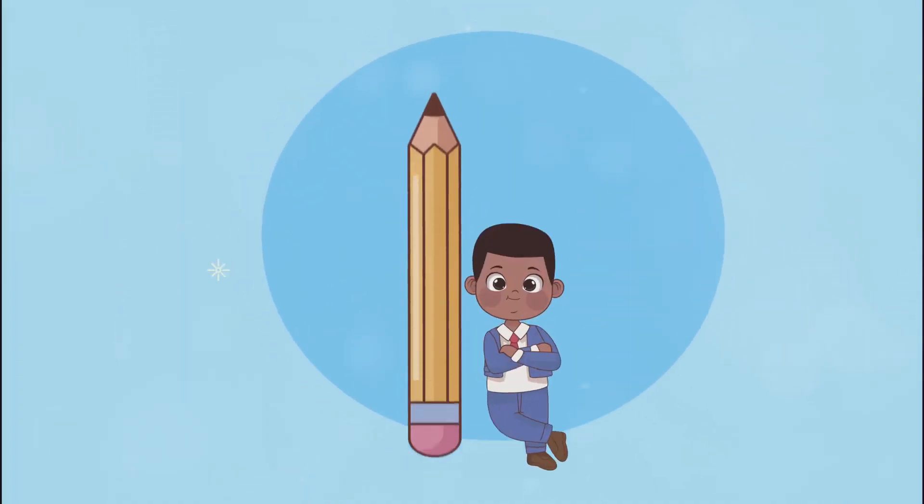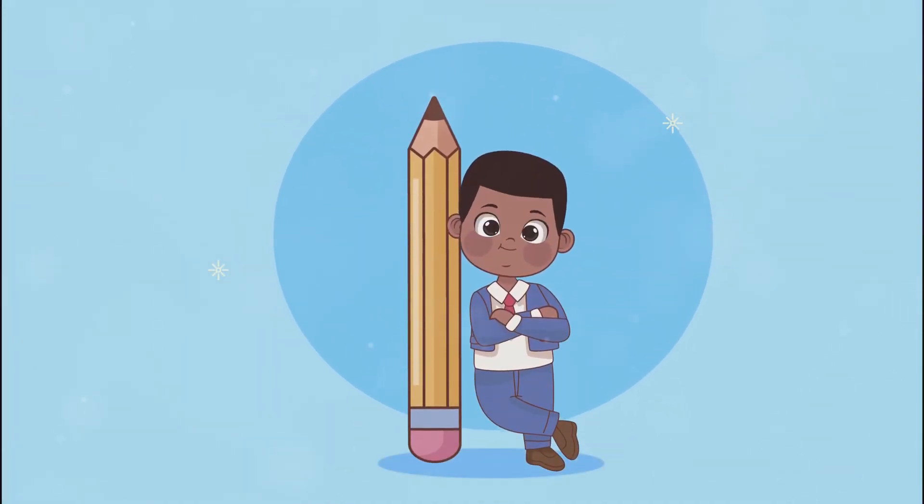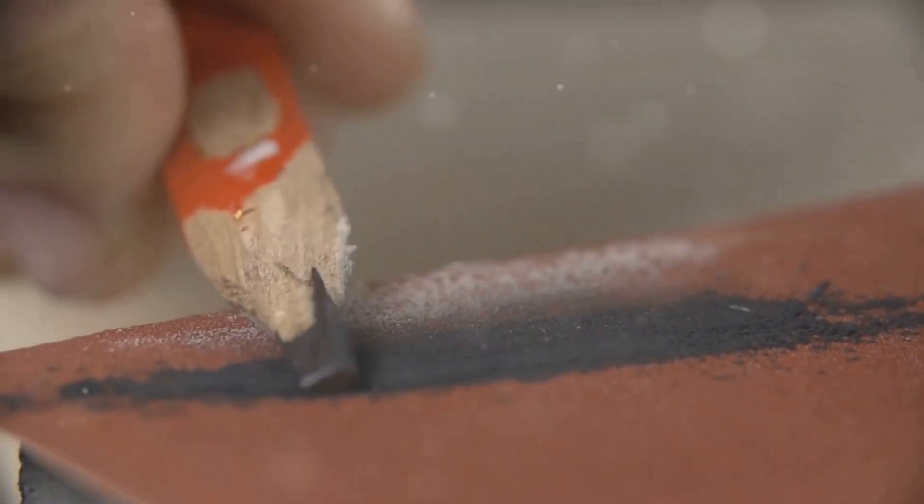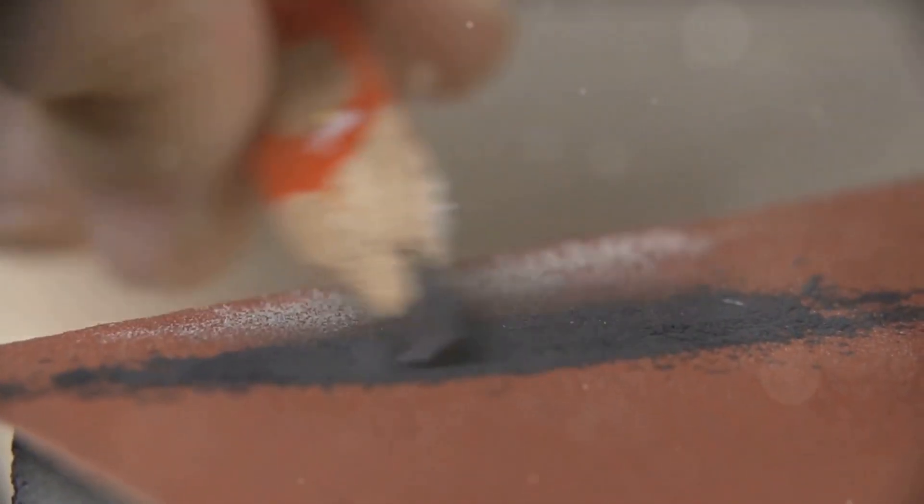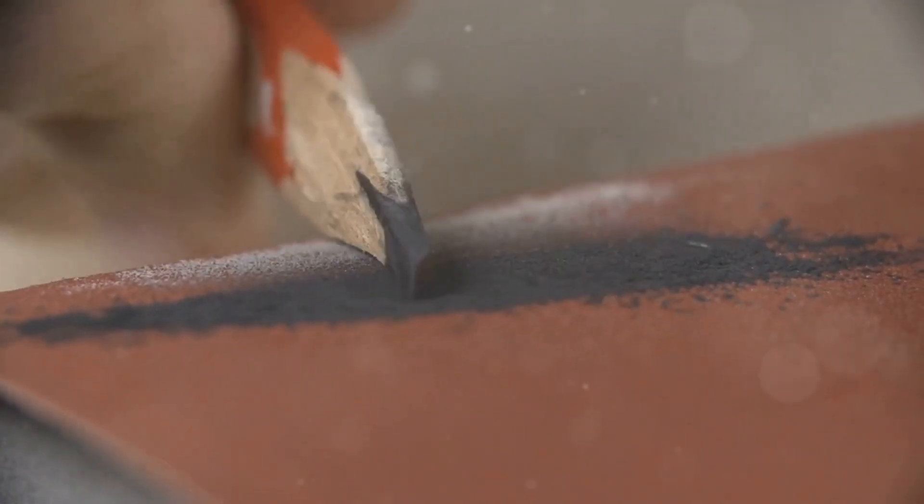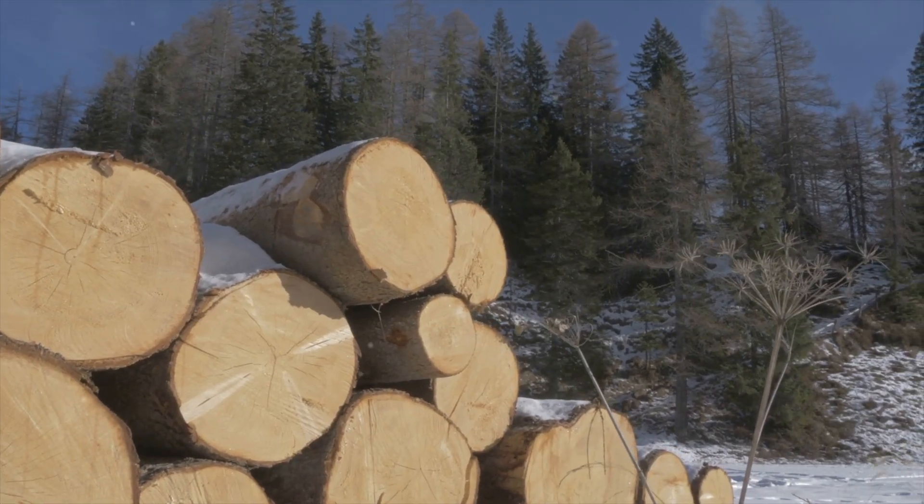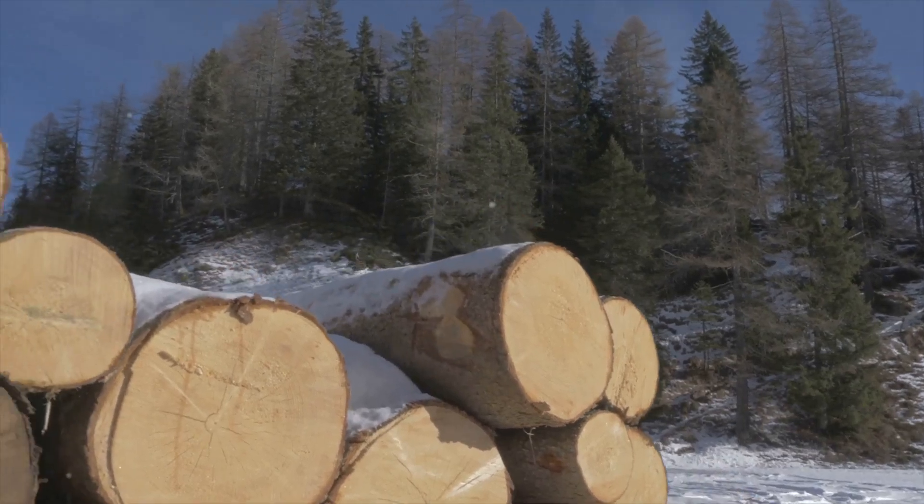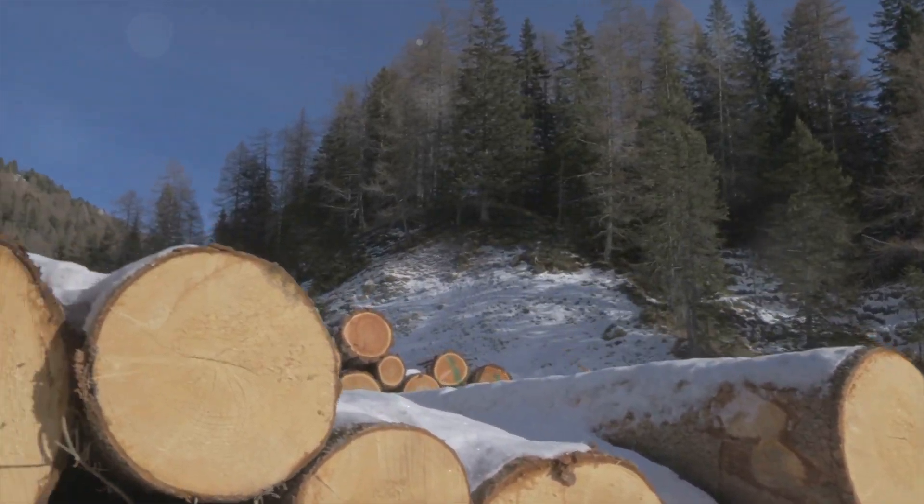The wooden casing. While the lead is the heart of the pencil, the wooden casing is its soul. The casing provides more than just protection for the fragile lead. It also influences the writing experience. Cedar wood, known for its straight grain, softness and pleasant aroma, is the preferred wood for pencil casings.